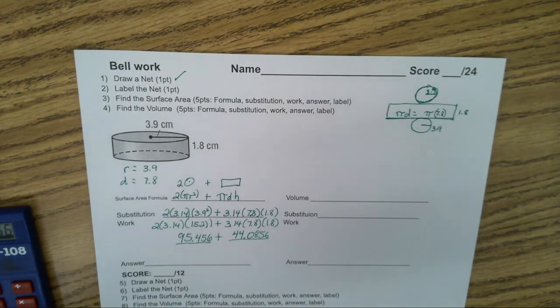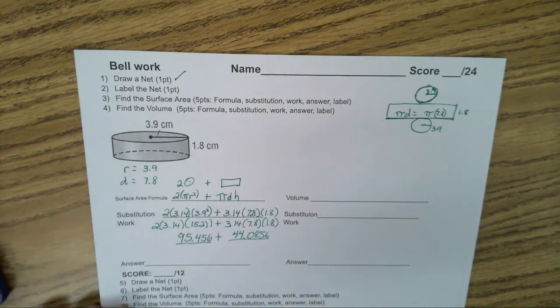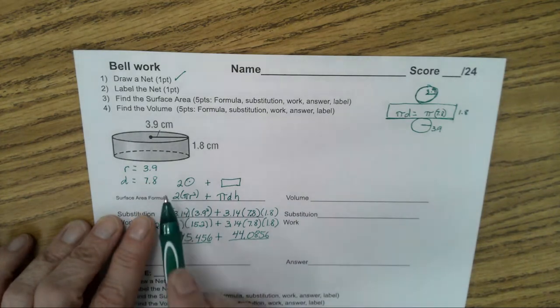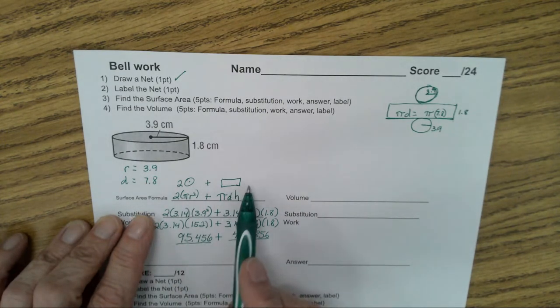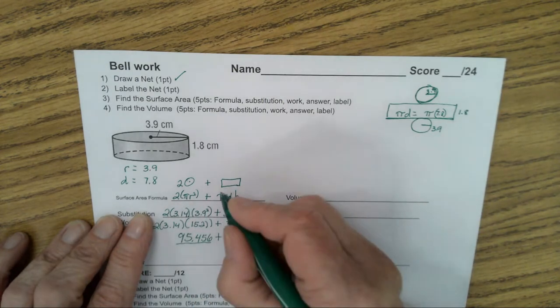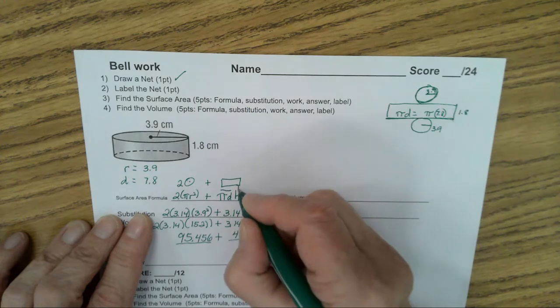Then we started doing our surface area formula. What are we adding together to get the surface area? Two circles and a rectangle. 2πr² plus πd times h. Pi d is the length, h is the width.